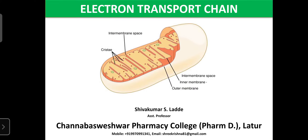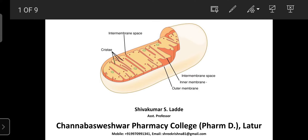Today our topic is the electron transport chain. The electron transport chain is mainly present in the membranes of the mitochondria, where it is helpful for the generation of ATP. The electron transport chain is nothing but a series of proteins or organic molecules that are helpful for the movement of electrons. Due to the movement of electrons, some protons are exchanged, and in the last step, certain energy is produced in the form of ATP.